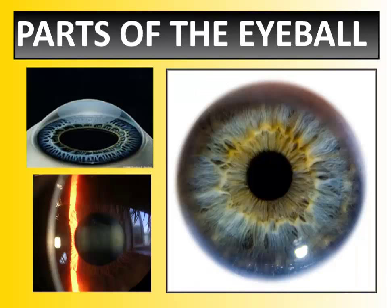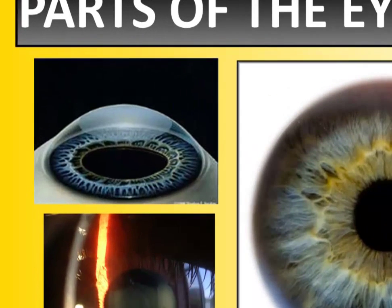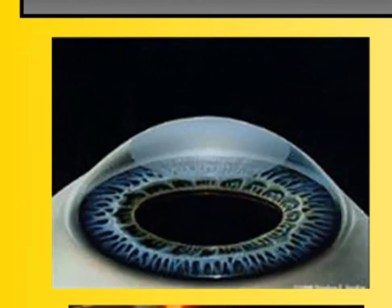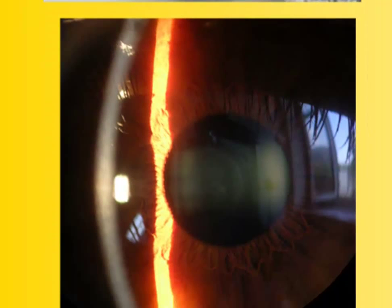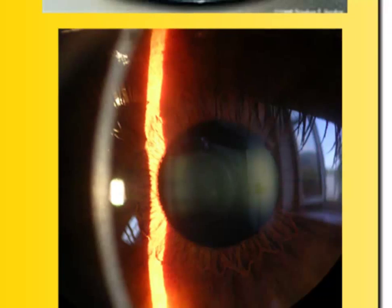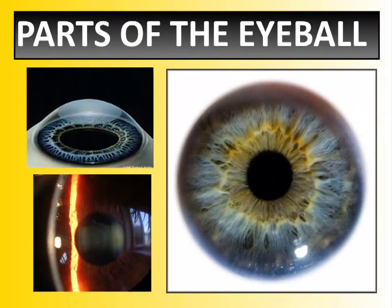Here are some images. You can see the cornea right up top, just a little bit sticking out of the eye. The picture below it actually shows how light can refract slightly as it travels through the cornea. And there's a nice picture of the iris there — very colorful on the right.